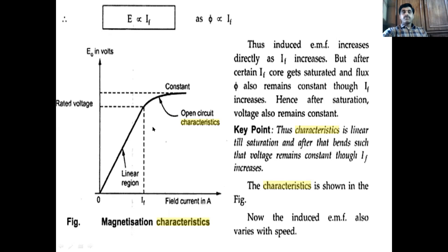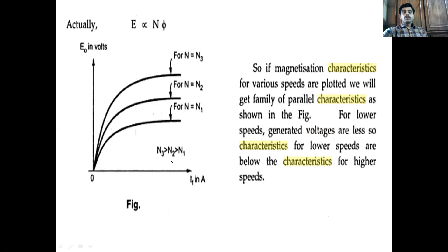When the speed increases, the EMF also varies. For a particular speed the characteristics change — for different speeds, different characteristics can be obtained. We can observe a family of parallel characteristics for speeds N1, N2, N3. For lower speeds the generated voltage is less; for higher speeds the generated voltage is more.